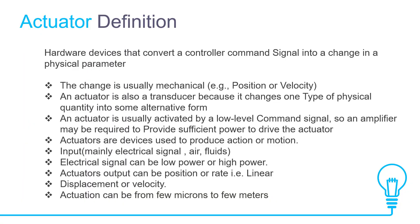We start with the actuator definition. An actuator is a device that produces a motion by converting energy and signals going into the system. The motion it produces can be either rotary or linear. In short, it is a hardware device that converts a controller command signal into a change in a physical parameter.